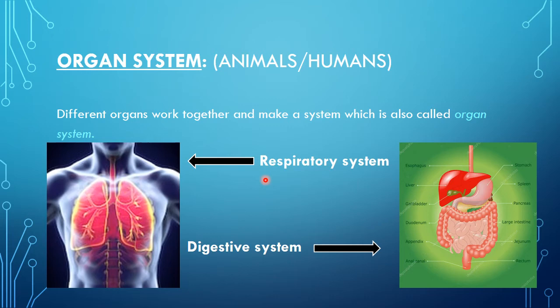This is the picture of the digestive system. In the digestive system also, several organs are present — food pipe, which is known as the esophagus. After the esophagus, food enters into the stomach. Stomach is another organ also made up of muscles, and its function is to digest the food.